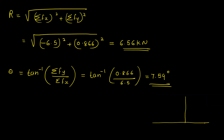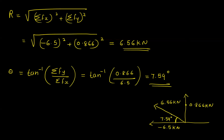This figure represents the result. The negative value gives minus 6.5 kilo Newton on the negative x-axis side, with the positive Fy side. The resultant is 6.56 kilo Newton. This angle is 7.59 degrees, and the total direction from the positive x-axis is 172.49 degrees.